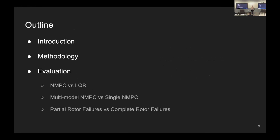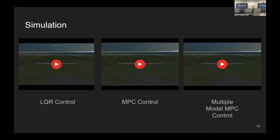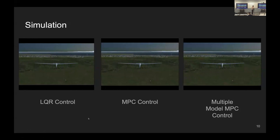Moving on to the evaluation part, I want to answer three questions: first, what is the performance of the NMPC controller versus the LQR controller? Second, what is the performance of multi-model NMPC versus a single NMPC controller? Third, how do these controllers react to different kinds of rotor faults — partial or complete rotor failures? We use FlightGear as the experimental environment and conduct flight control under three kinds of controllers: LQR control, MPC control, and multi-model NMPC control.